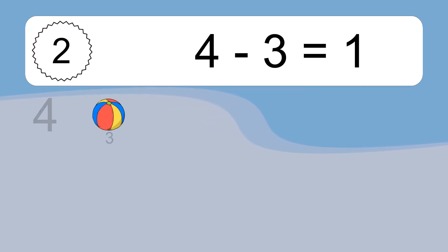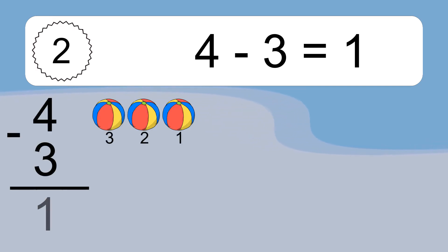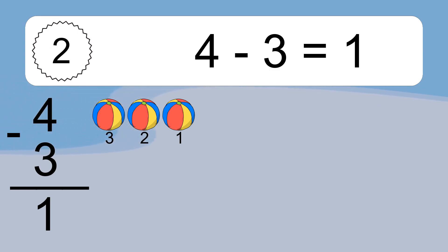4 minus 3 equals what? 4 minus 3 equals 1. Let's count it: 3, 2, 1.